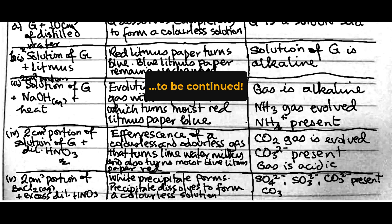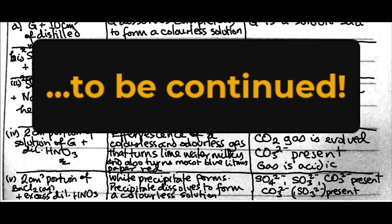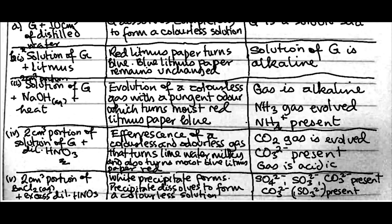So, CO3²⁻, as you say, SO3²⁻ present. But, for the fact that we already confirmed that it is CO3²⁻ here, we may not add this guy here, this SO3²⁻. I might just leave it as CO3²⁻. Alright. So, that's that on the qualitative analysis. Let's move on to question 3.